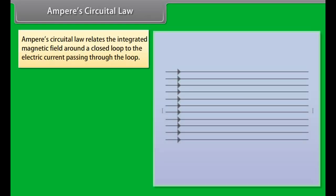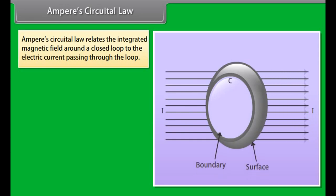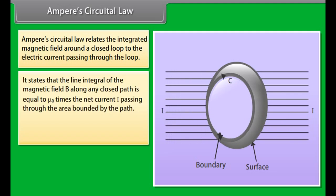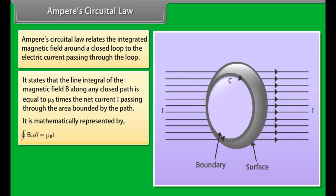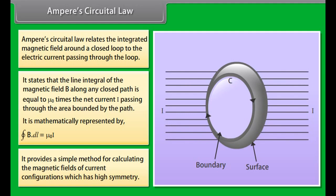Ampere's Circuital Law relates the integrated magnetic field around a closed loop to the electric current passing through the loop. It states that the line integral of the magnetic field B along any closed path is equal to mu naught times the net current I passing through the area bounded by the path. It is mathematically represented by: closed integral of B dot dL is equal to mu naught I. It provides a simple method for calculating the magnetic fields of current configurations which have high symmetry.